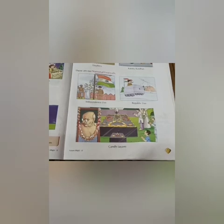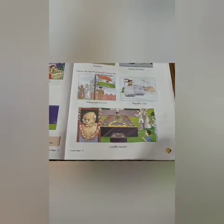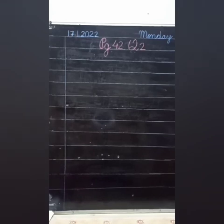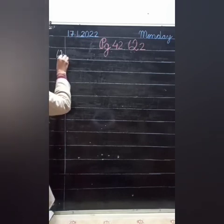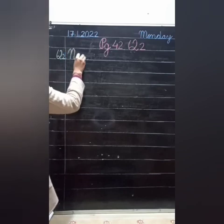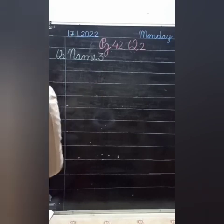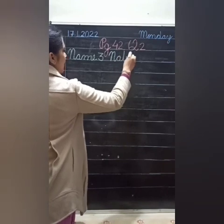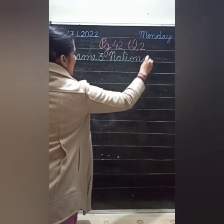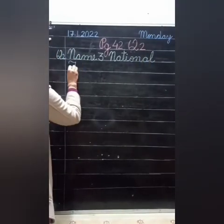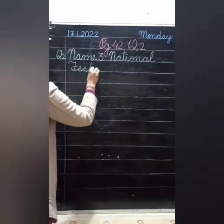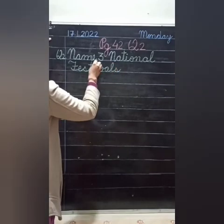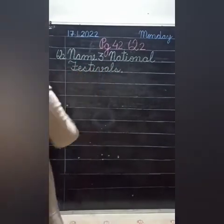Now my dear children, take out your GK notebooks. It's time to do the notebook work. Quickly write down the date, day, and the heading of page 42, question number 2. Write down here: Question number 2 — Name 3 national festivals. Capital N-A-T-I-O-N-A-L, national. Capital F-E-S-T-I-V-A-L-S, festivals. Name 3 national festivals.